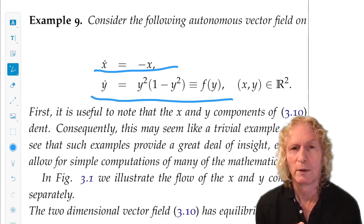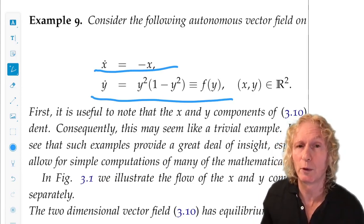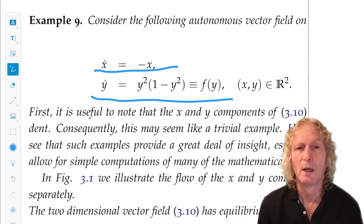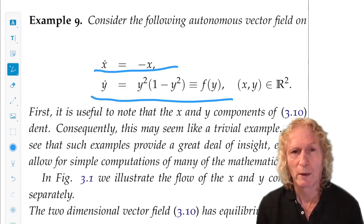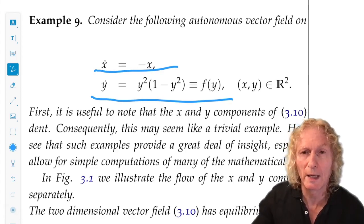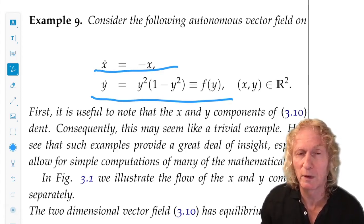If your set has a nice, smooth structure so that you can define the tangent vector to each point in the set, the manifestation of invariance would be that the vector field is always tangent to the invariant set.